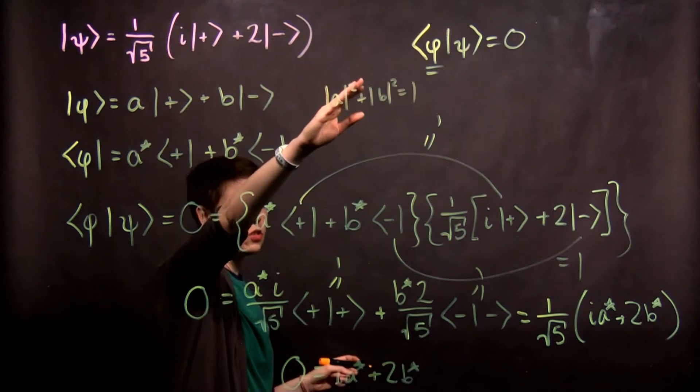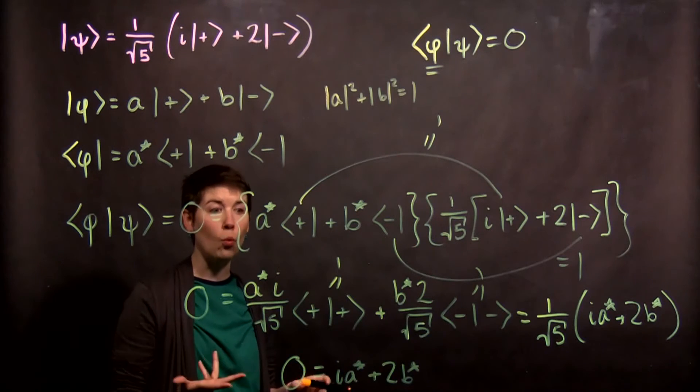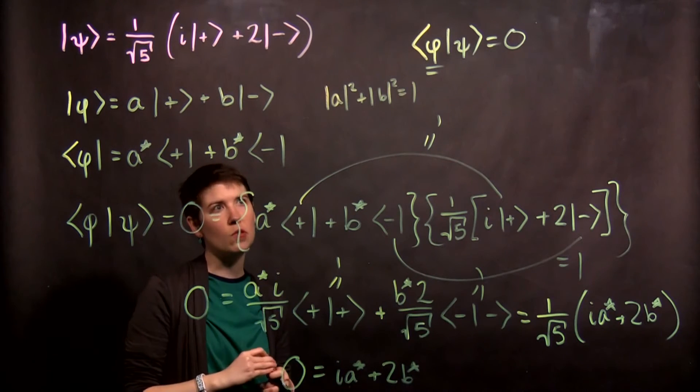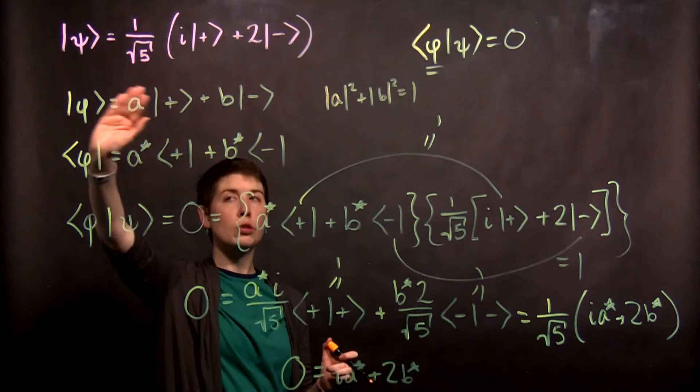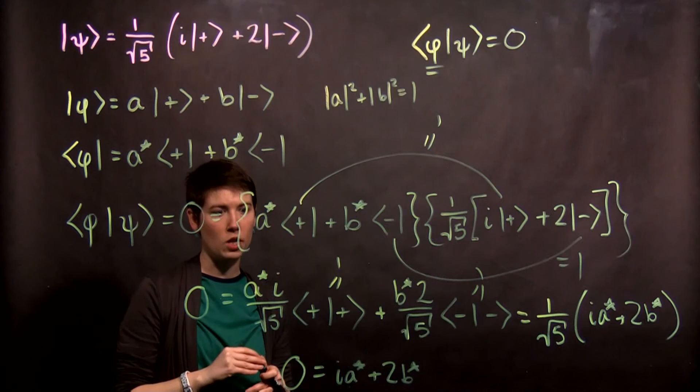And so we could use this constraint and this constraint to actually determine what these are. Now, another option is that we actually explicitly included a normalization coefficient. There's a few different ways to approach it.